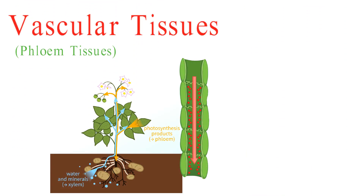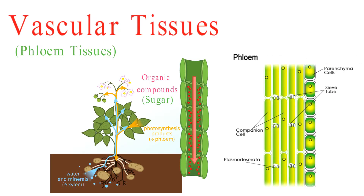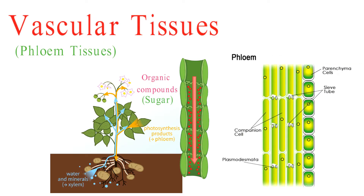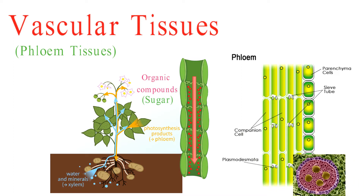Phloem is responsible for transporting organic compounds, primarily sugars, from the leaves to other parts of the plant. While xylem cells are typically dead at maturity, phloem cells in vascular bundles remain alive. They maintain their metabolic activity to support the movement of sugars throughout the plant, akin to a living transportation system.